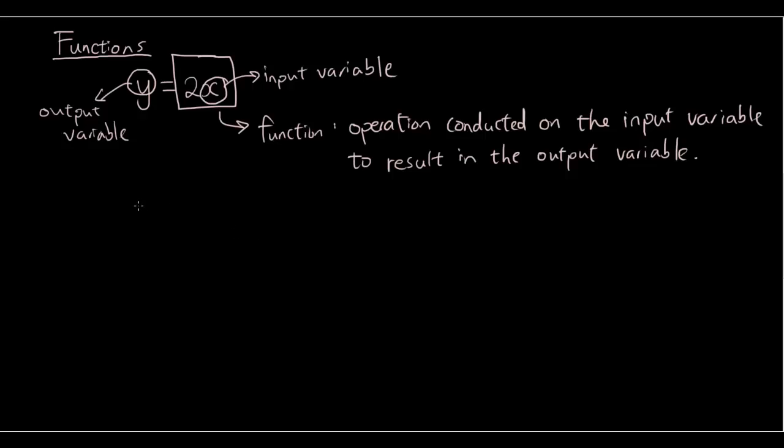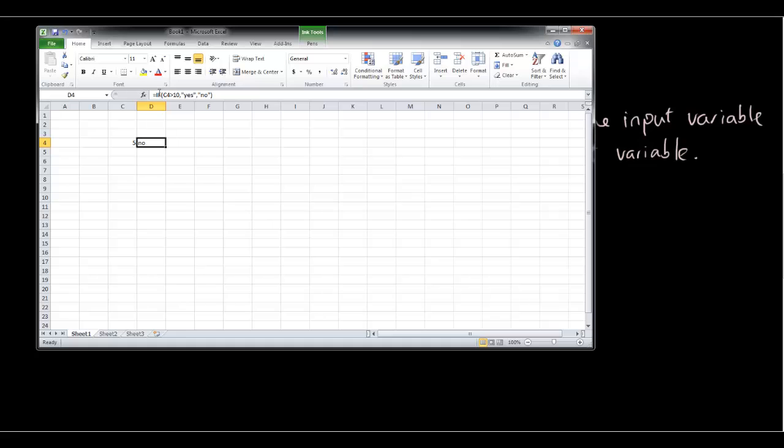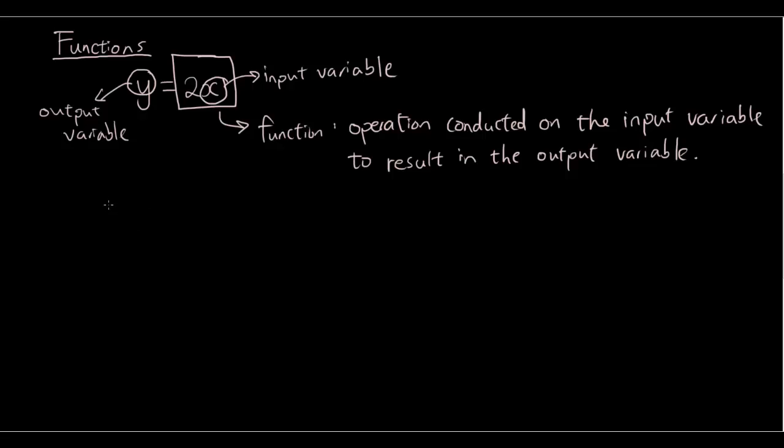So you also need to understand how to rewrite a function using function notation. So if you remember in Excel we had if bracket. So in maths it's sort of similar. We have a function and bracket. So we have the input inside the bracket. And the output we put on the other side of the equal sign. So let's say we define our function as f. The function of x is the input. So x is the input. And the output is 2x.